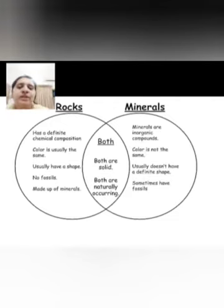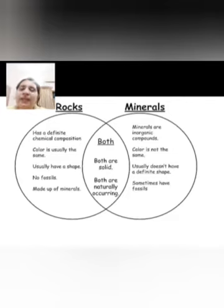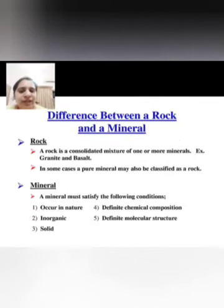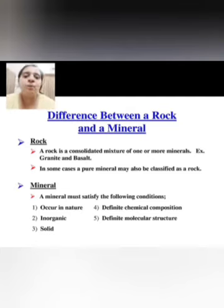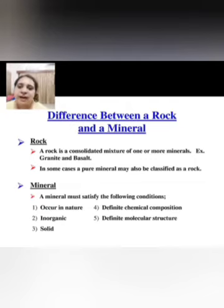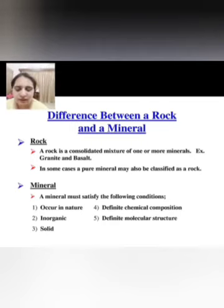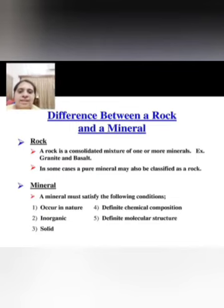Now let's see what is common between a rock and a mineral. Both are solid and both are naturally occurring — they occur naturally on our earth. A rock is a consolidated mixture of one or more minerals. Examples are granite and basalt. In some cases, a pure mineral may also be classified as a rock.